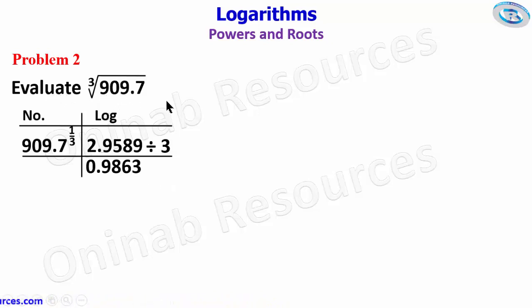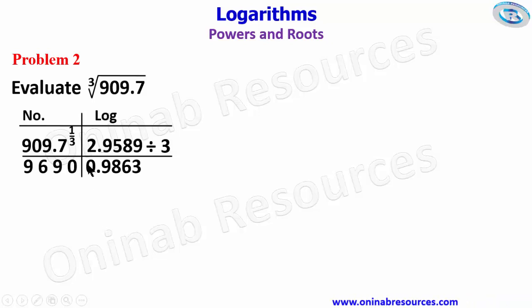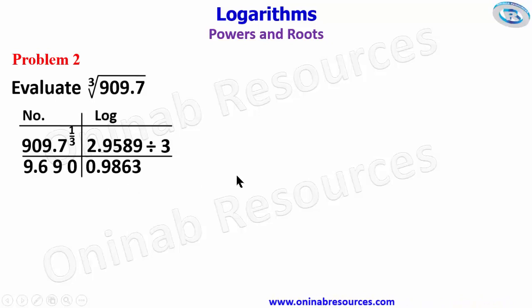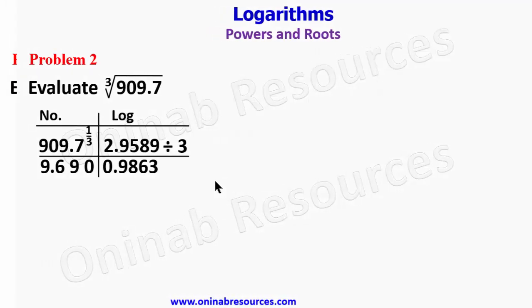We keep the integer part and check 0.9863 from the antilogarithm table, which gives 9690. We add 1 to the integer part — 0 plus 1 gives 1. We count 1 digit and place the decimal point after the 9, so the cube root of 909.7 is 9.690. That's all for Problem 2. We then go to Problem 3.